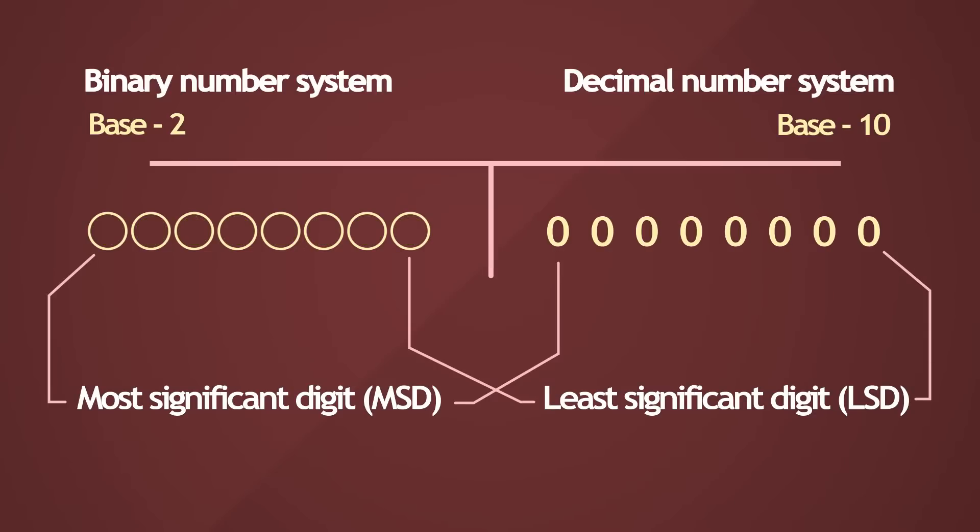It's called so because modifying the least significant digit has the least impact to the overall number that it represents. On the other hand, changing the most significant digit will significantly alter the number.